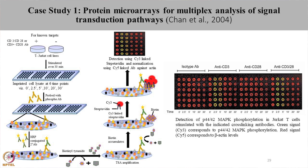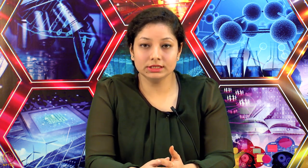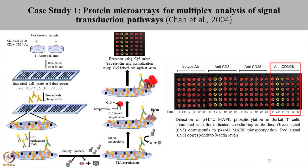The cells were treated with isotype antibodies which acted as control, with CD3 antibody, CD28 antibody, and CD3 and CD28 antibody in combination. When the cells were treated with CD3, there was a quick phosphorylation observed at 2.5 minutes which reduced at 5 minutes. There was no change in the phosphorylation status of MAPK when the cells were treated with CD28 antibodies. When the cells were treated with the combination of CD3 and CD28, a sustained phosphorylated MAPK was observed and the signal intensity even at 5 minutes was prominent.